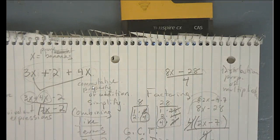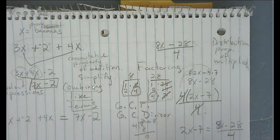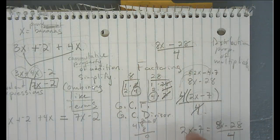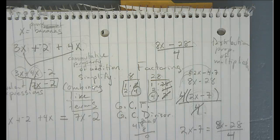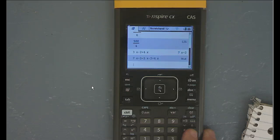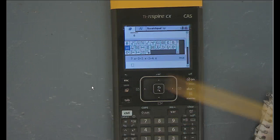You remember we had this one: 8x minus 28 over 4, and we had to do all that factoring. I'm going to show you a couple tricks for doing that. First, I'm just going to show you the quickest way to get to the simplified form, 2x minus 7. To do that, I want to put in a fraction. You remember this button over here that I told you was a template button next to the 9? If I press that button, I see all kinds of templates.